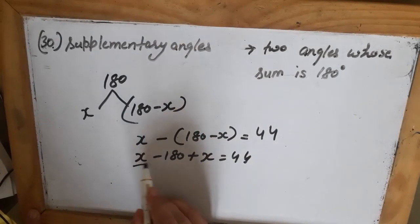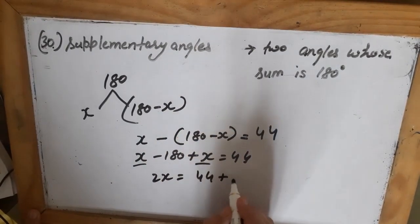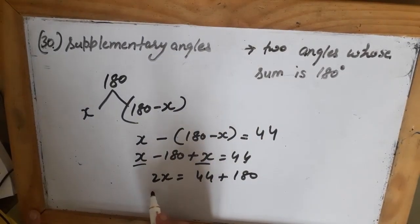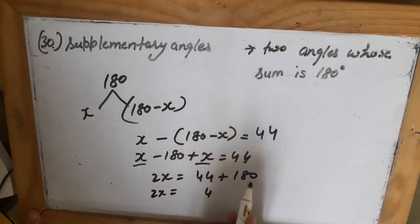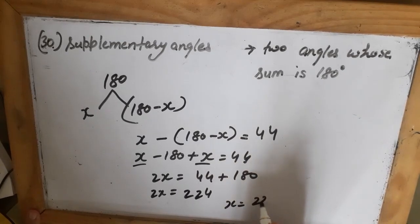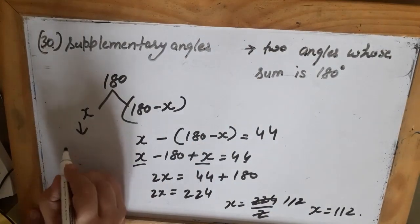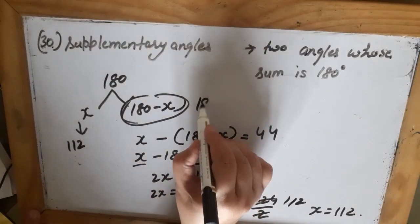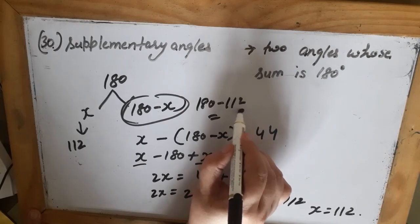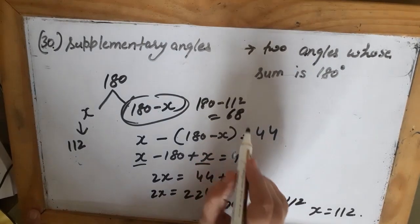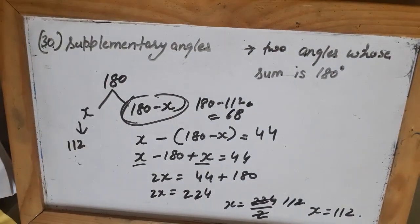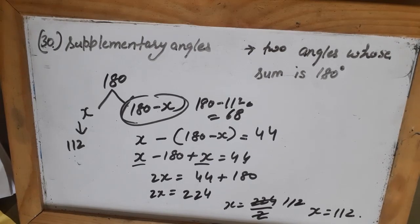Solving: x minus (180 minus x) equals 44. Minus and minus becomes plus, so 2x minus 180 equals 44, giving 2x equals 224, so x equals 112. One angle is 112 degrees and the other is 180 minus 112 equals 68 degrees. Note: in the PDF I wrote 168 but it should be 68 degrees.